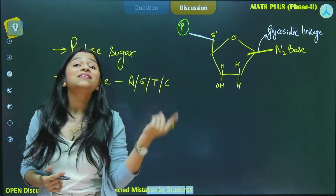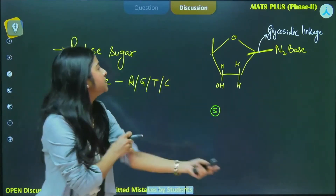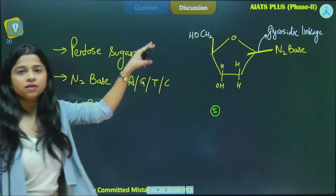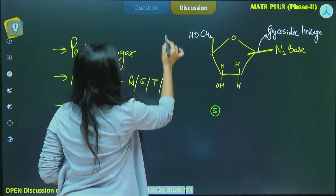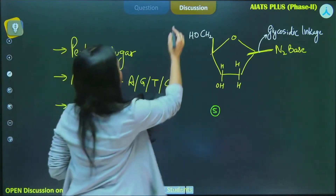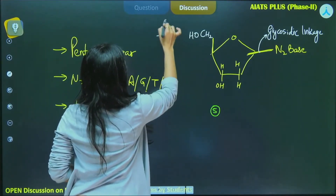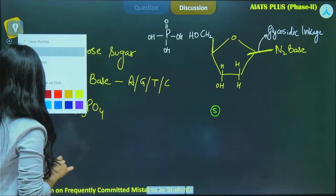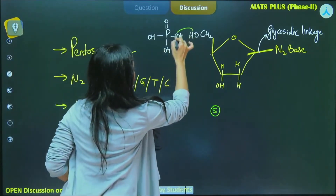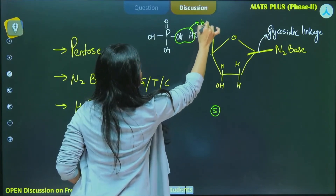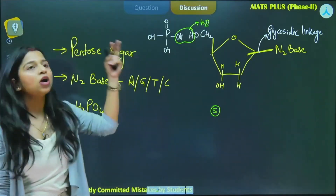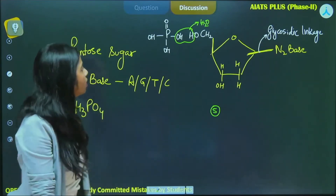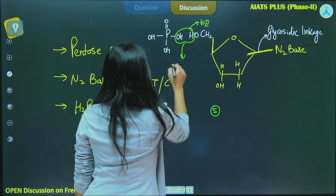The ester bond is formed when water is released — as you know from organic chemistry. Here we have the presence of CH2OH, and the phosphate group is H3PO4. Water is released from these two — H is released — and when the water is released, the ester bond is formed. Because the phosphate group is attaching, we call it the phosphoester bond.